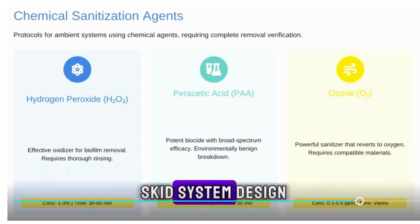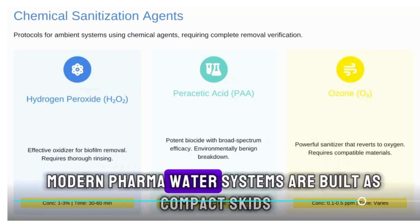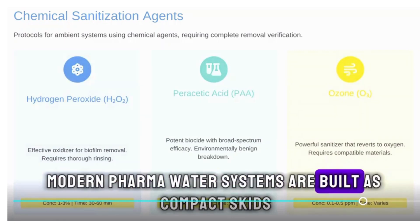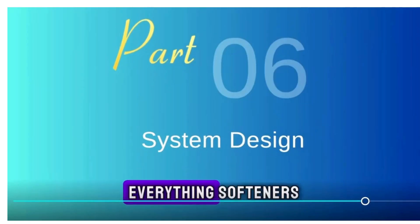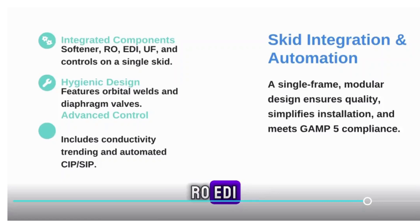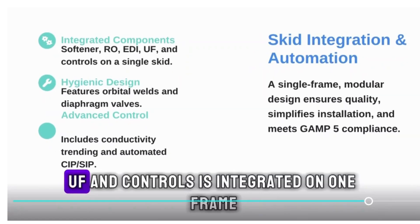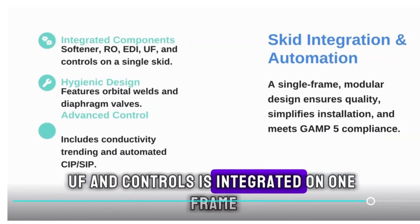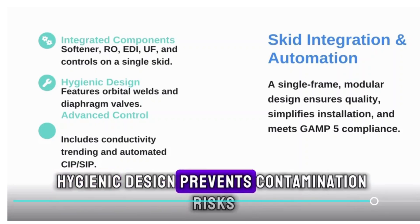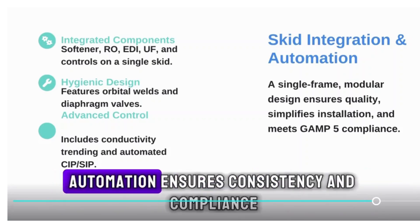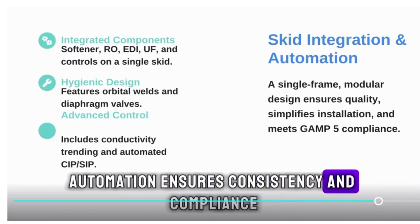Modern pharma water systems are built as compact skids. Everything — softeners, RO, EDI, UF, and controls — is integrated on one frame. Hygienic design prevents contamination risks, and automation ensures consistency and compliance.